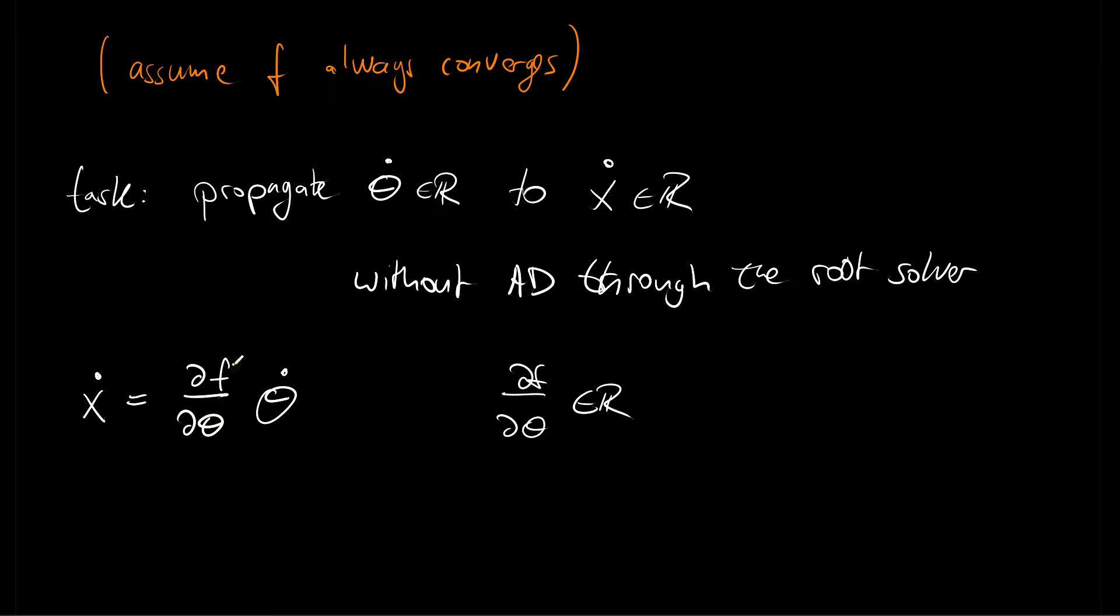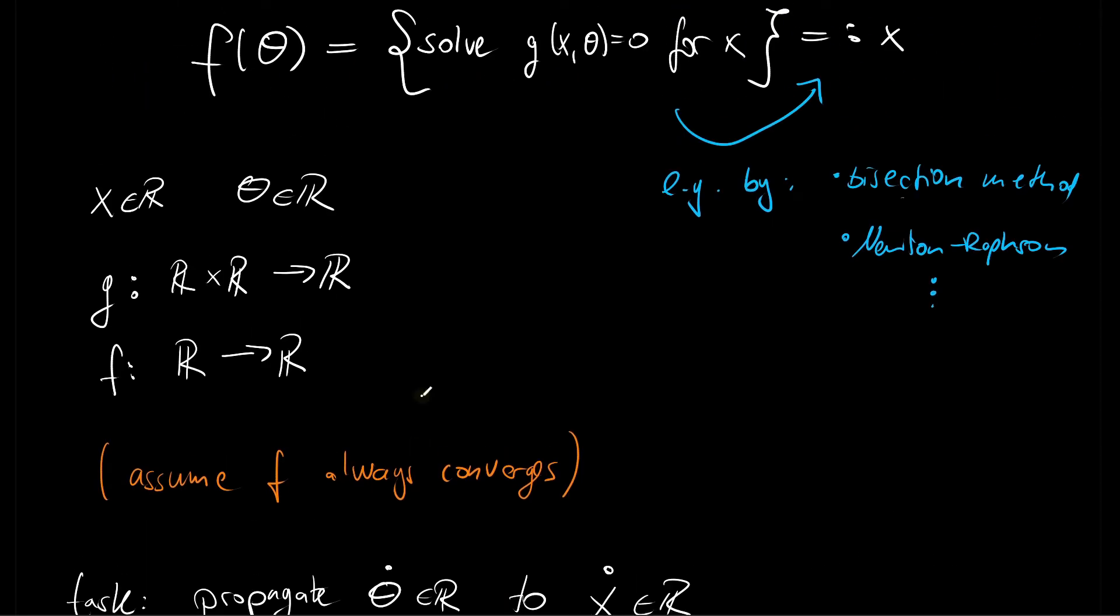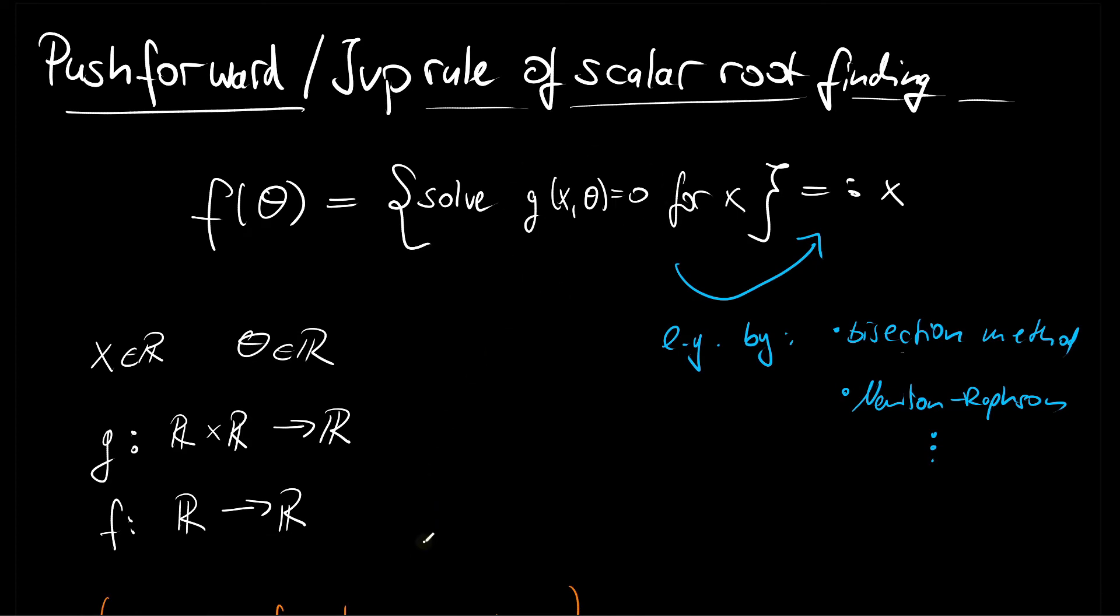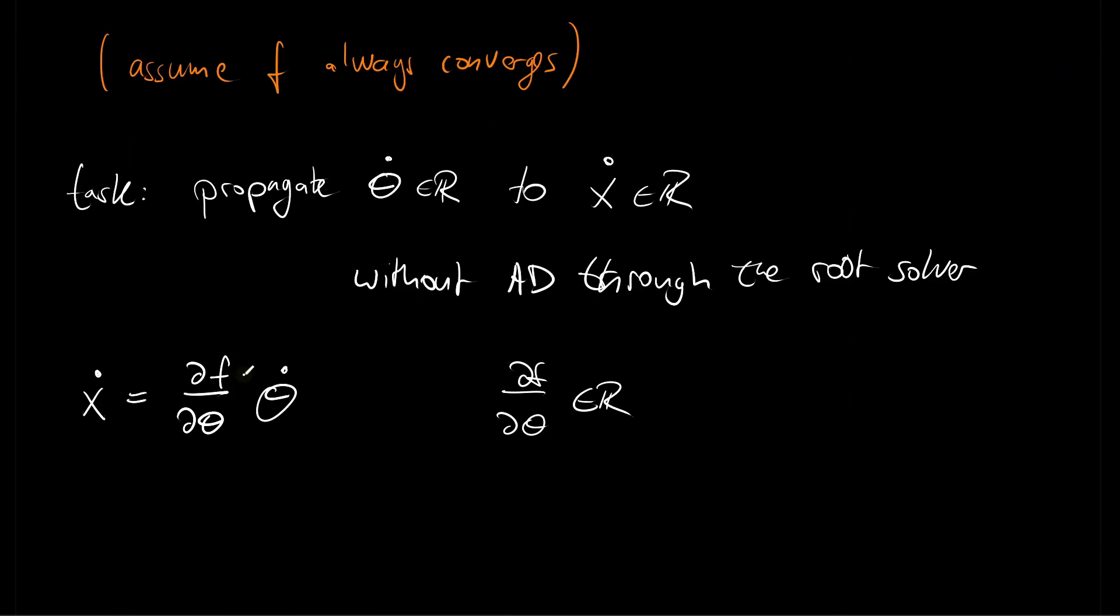But how do we obtain that? I mean, in the end, if we used AD through the root solver, this product is what this AD would evaluate. How can we circumvent that? And the idea is that we cleverly use the implicit function theorem and in more easy terms, we will take the total derivative of our optimality condition and then we will see that this quantity, df by d theta, naturally arises.